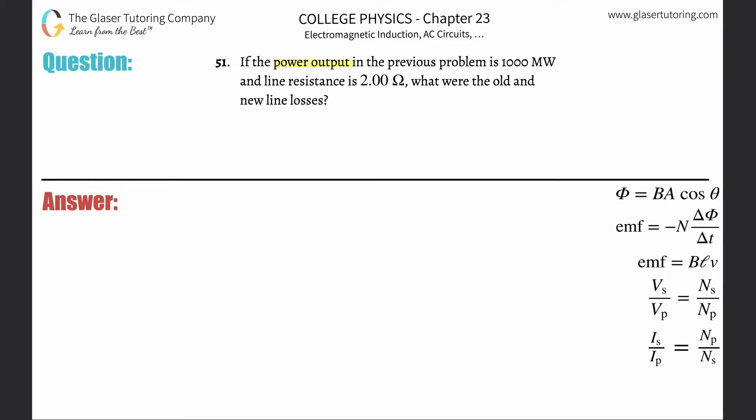Number 51. If the power output of the previous problem is 1000 megawatts and the line resistance is 2 ohms, what are the old and new line losses? Alright, so let's take a look at the power formula. P is equal to IV.